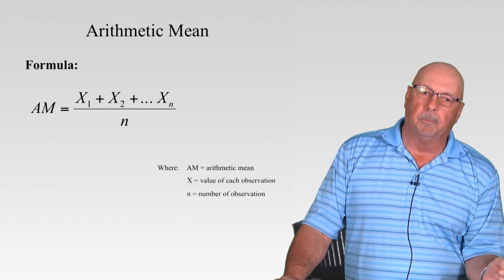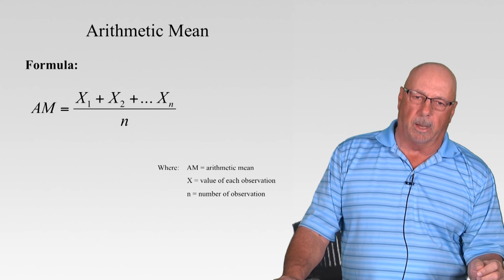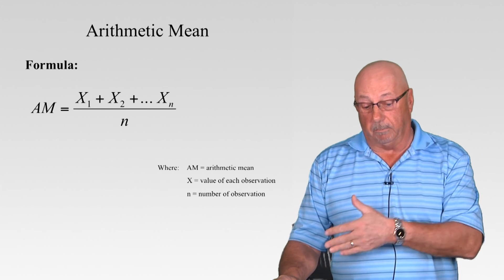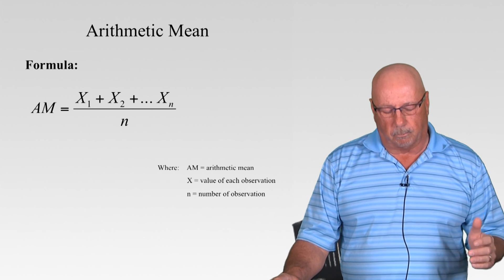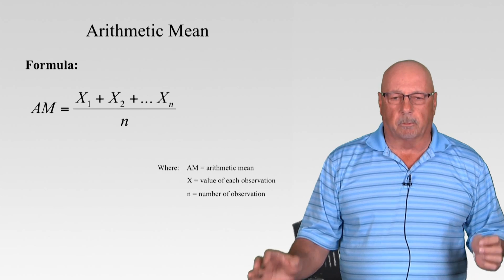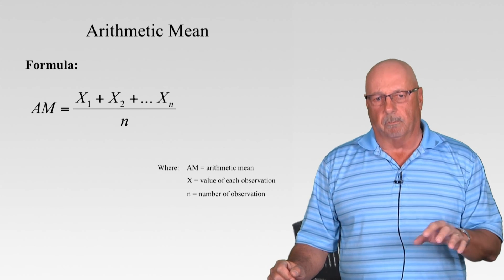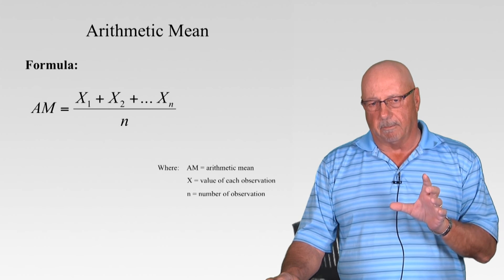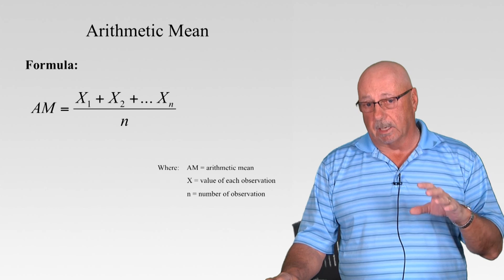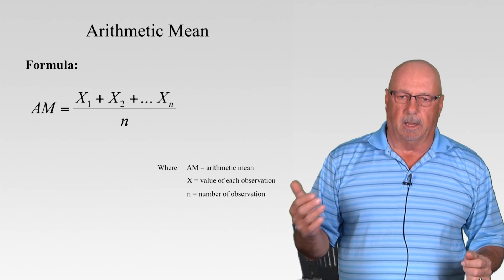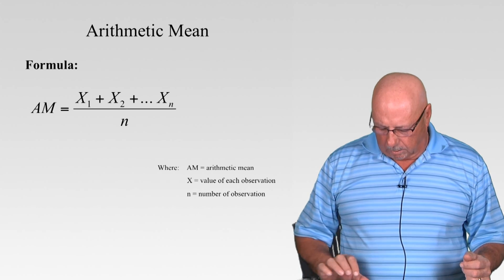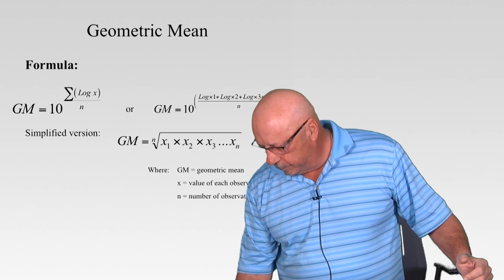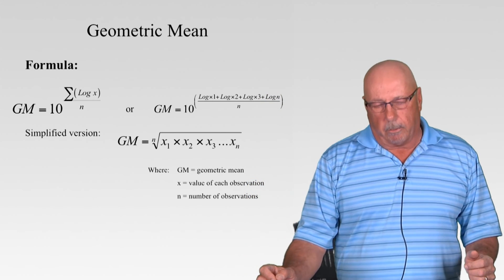We're going to start with the basic statistical evaluation of a group or set of numbers, beginning with the arithmetic mean and standard deviation. The formula for arithmetic mean is simply the summation of the number set divided by the number of observations. If I have three observations, I add those three numbers together and divide by three to get the arithmetic mean.